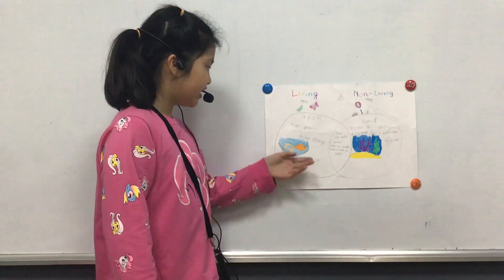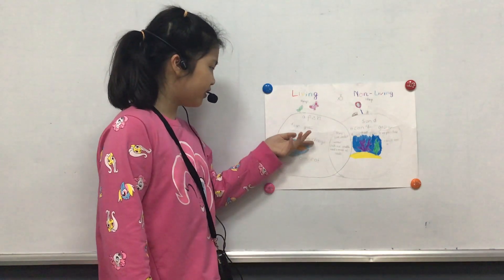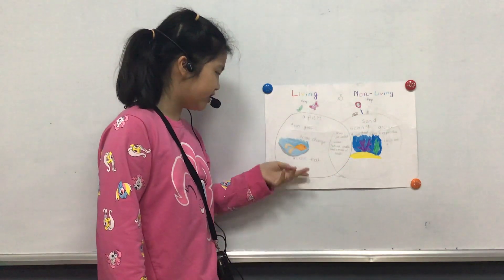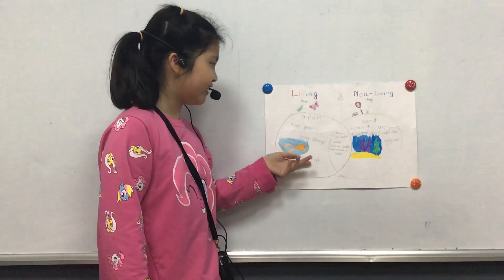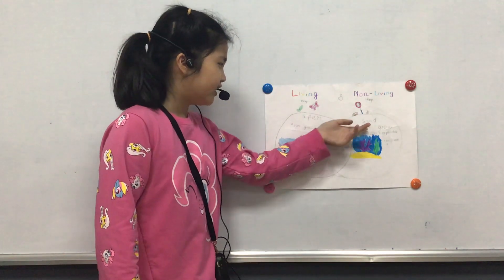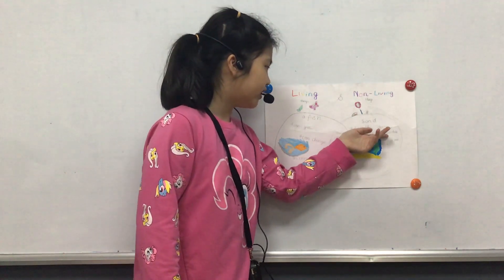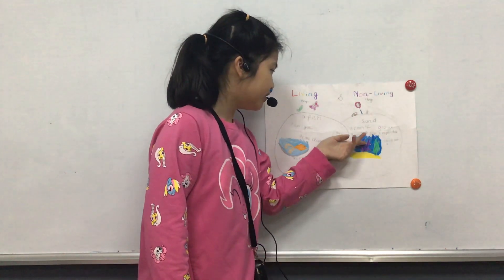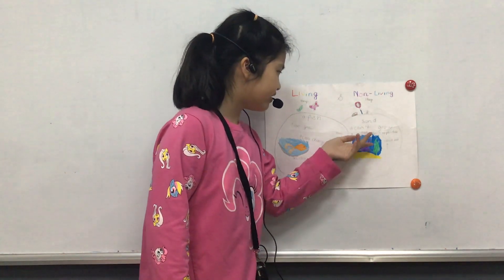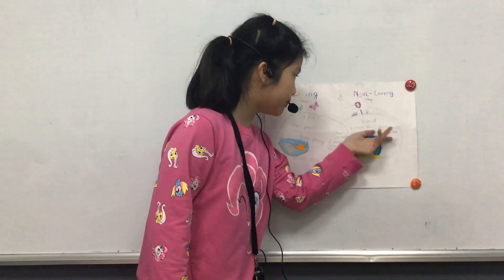A fish — it can grow, it can change, it can eat. Sand — it can grow, it can eat, it can reproduce.